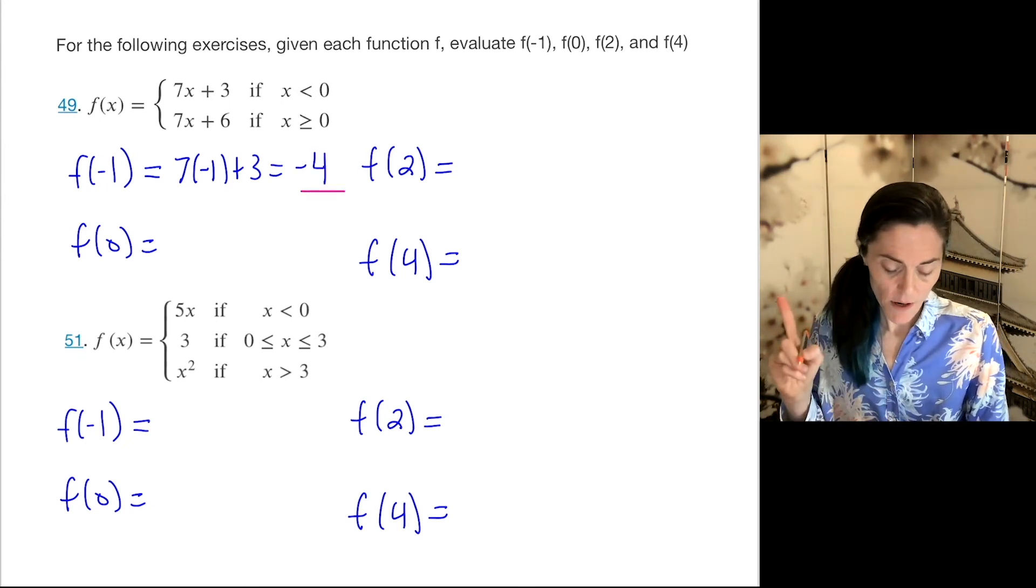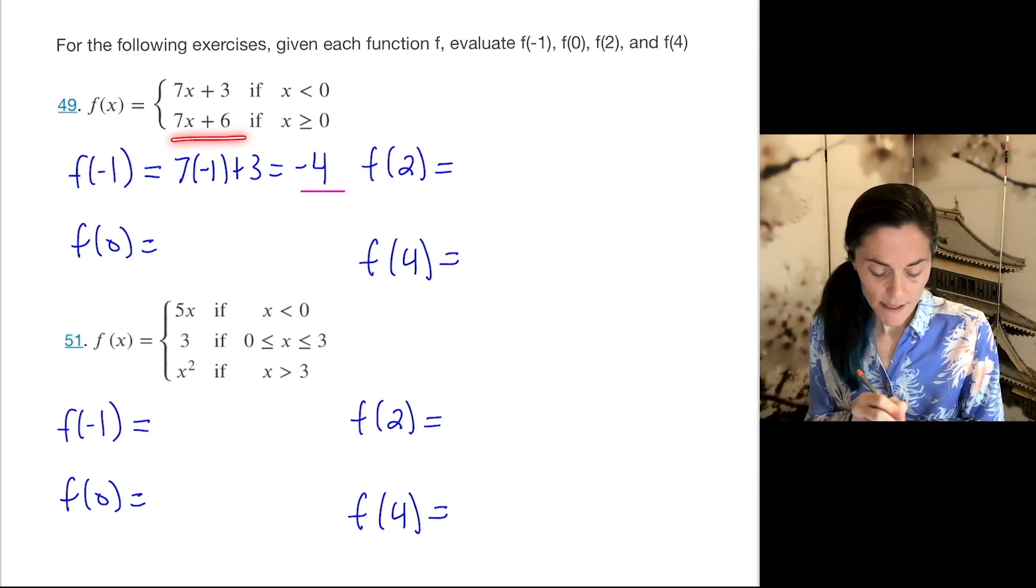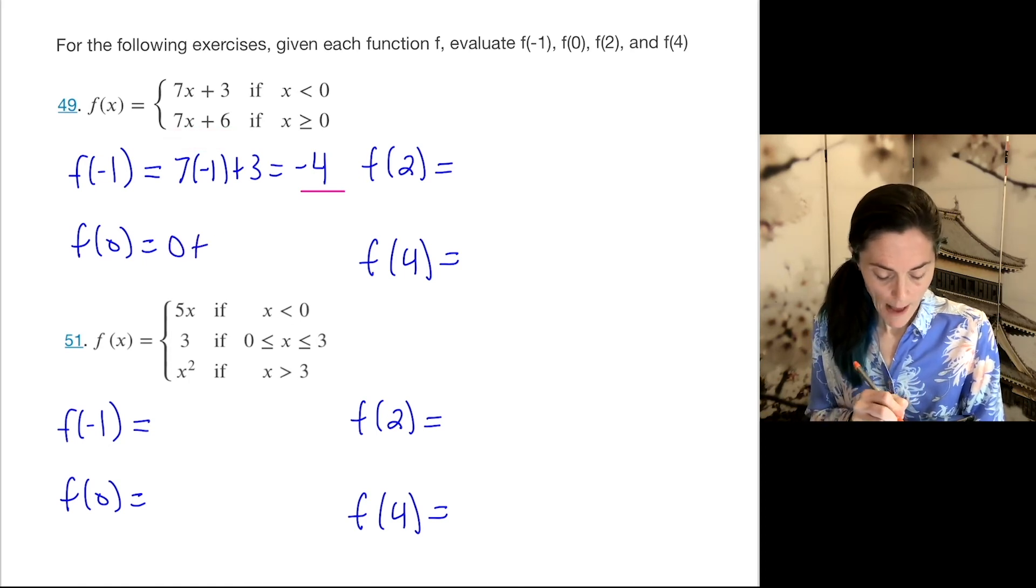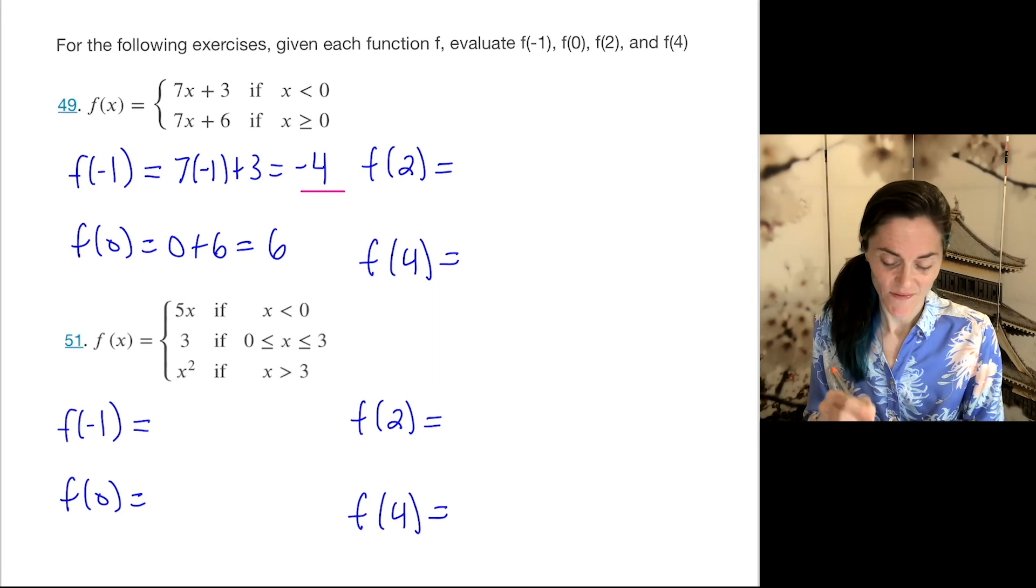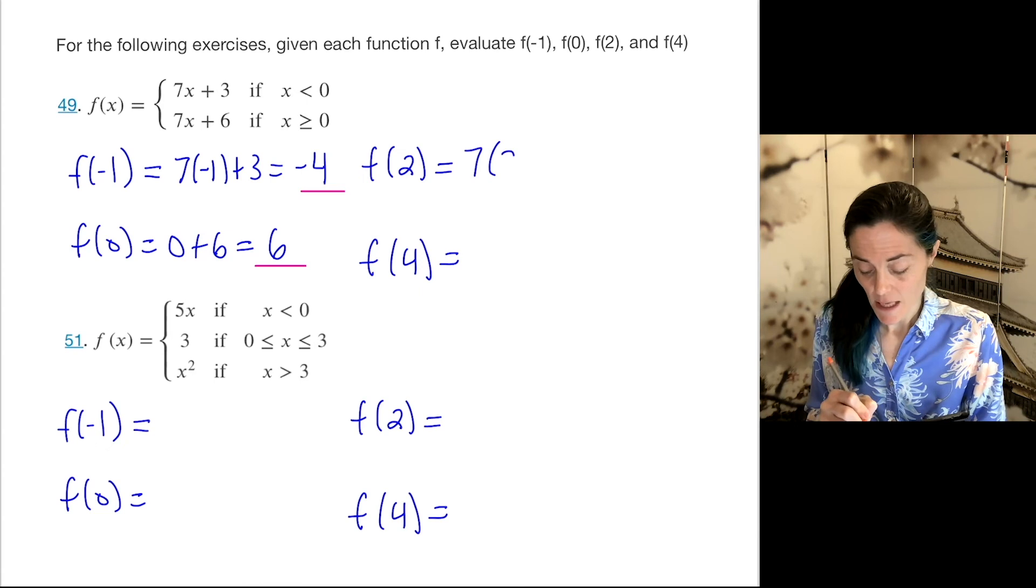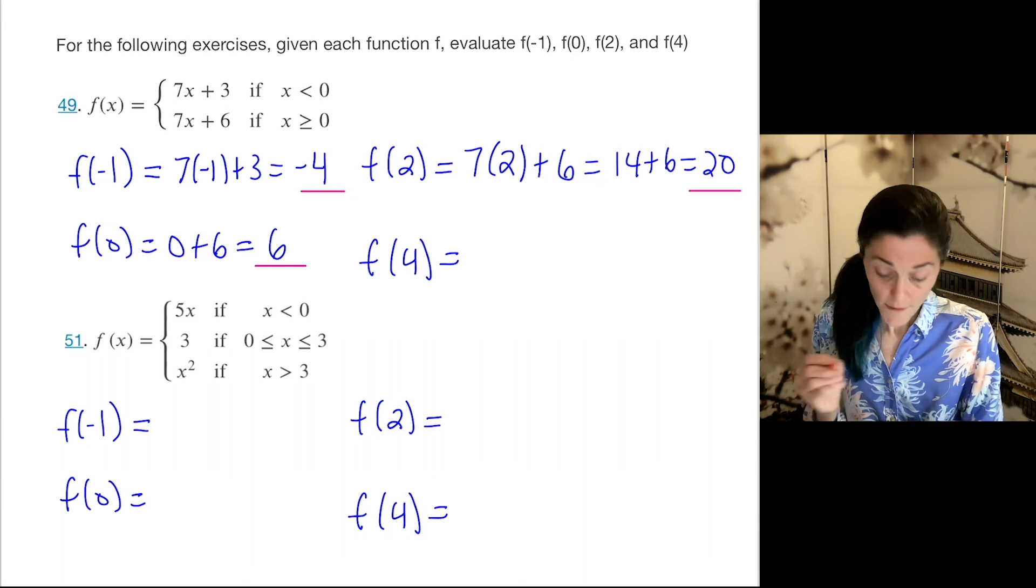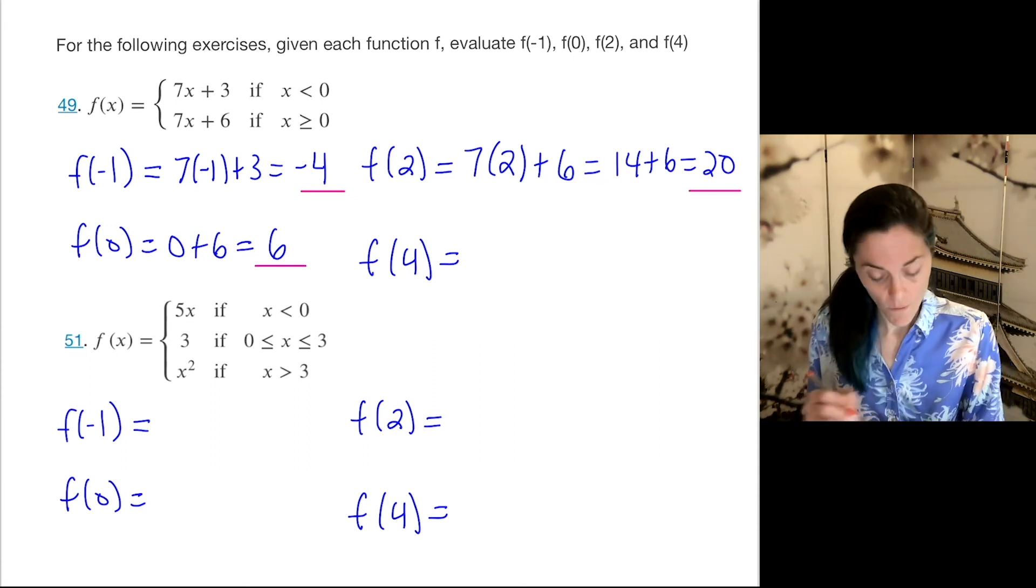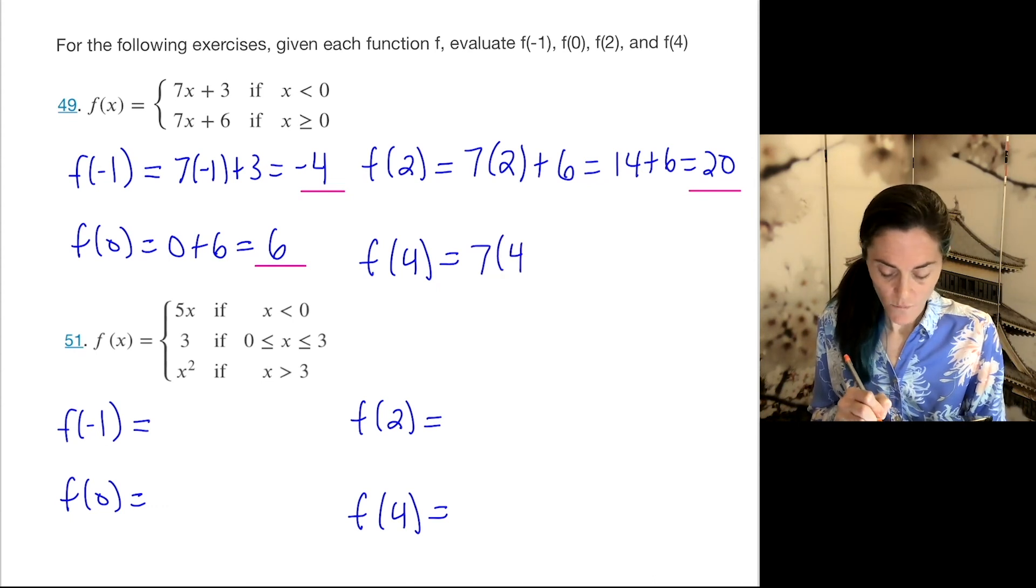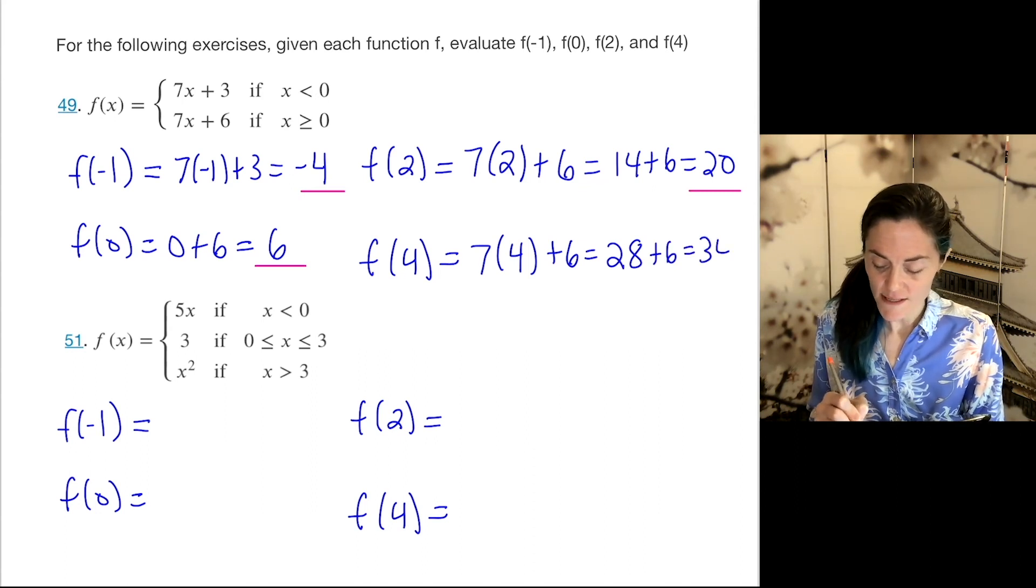The other three, 0, 2, and 4 are in the other interval. f(0), we use here. This is just 0 plus 6, which is 6. Now we have two more. f(2), this is 7 times 2 plus 6. This is 14 plus 6, which is 20. And the last one we want for this function is f(4). This is 7 times 4 plus 6, which is 28 plus 6. f(4) is 34.